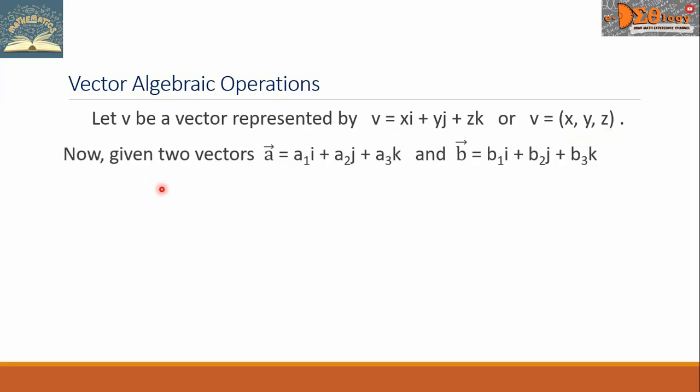Now, given two vectors: Vector A equals a sub 1 i plus a sub 2 j plus a sub 3 k, and vector B equals b sub 1 i plus b sub 2 j plus b sub 3 k.